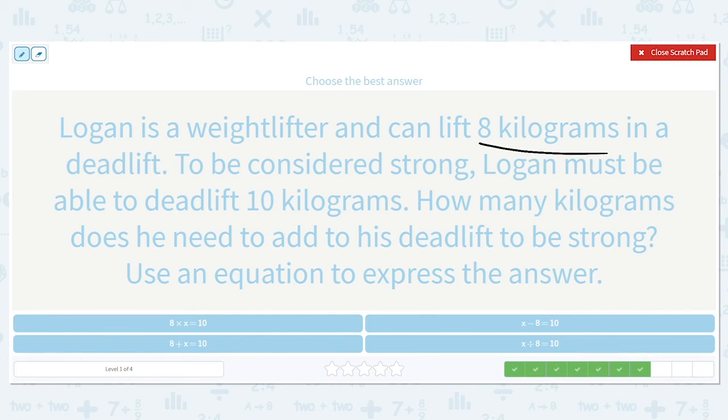Next one. Logan is a weight lifter and can lift eight kilograms in a deadlift. To be considered strong, he must be able to lift 10 kilograms. How many kilograms does he need to add to his deadlift to be strong? Okay, so we know that he needs to be able to add a total of 10 kilograms. How many can he currently lift? We know he can currently lift eight. We need to know how many more he needs, so we need to add on a certain number to figure it out. So 8 plus x equals 10.